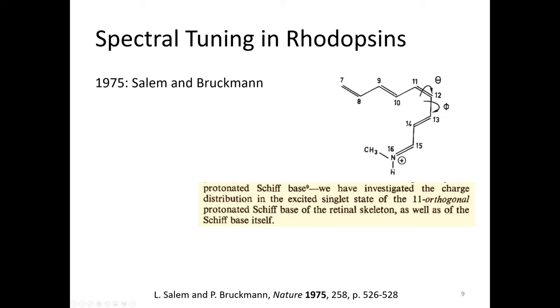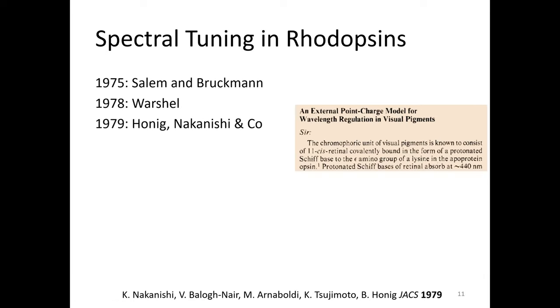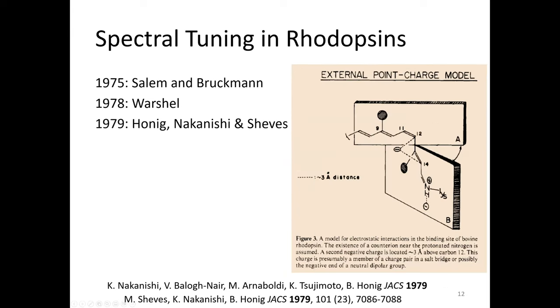Now I want to give you a quick historical background about studies of spectral tuning in rhodopsins and what is the predominant mechanism. I think it started in 1975 by the seminal work by Salem and Bruckman. This was still the time where you could publish purely computational studies in Nature. They found out that upon twisting of double bonds there is a migration of the positive charge which sits on this nitrogen and it moves towards the beta-ionone ring. This model was then further refined in 1978 by Arieh Warshel. He did full-size retinal calculation and found indeed in the excited state there is an intramolecular charge transfer. Due to this charge transfer, the bond length alternation is changing in the excited state.